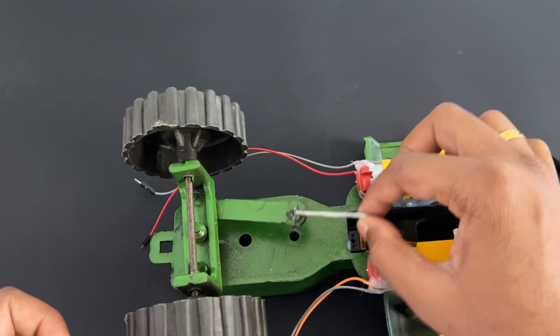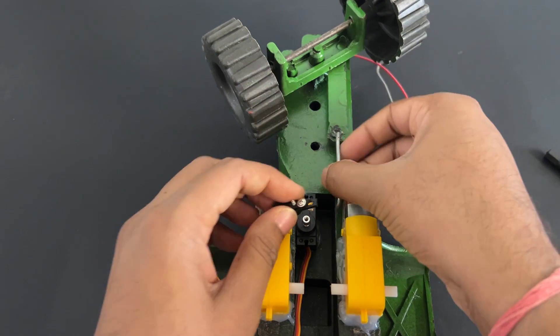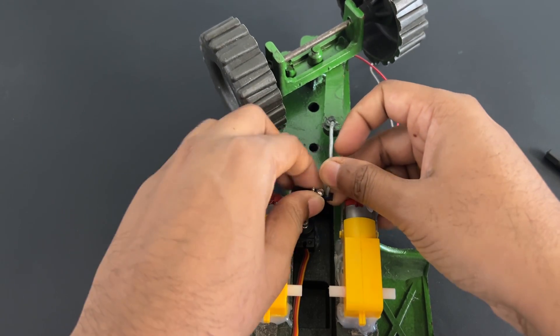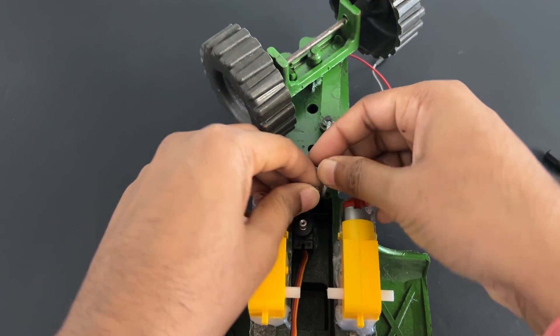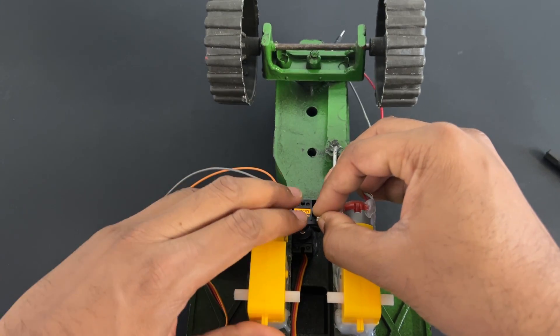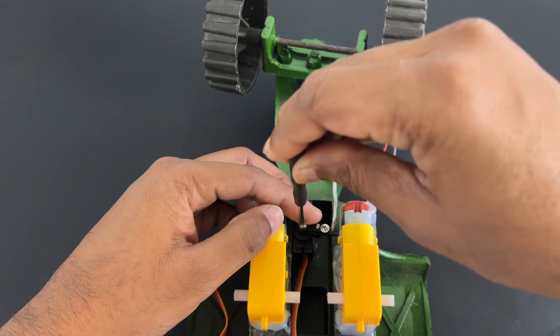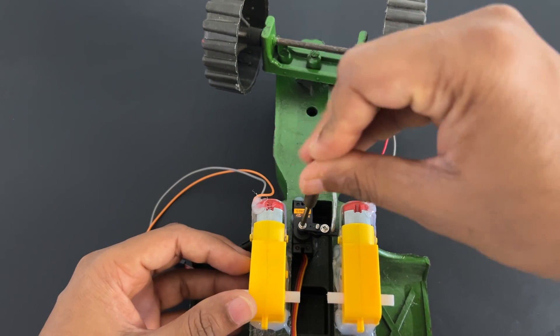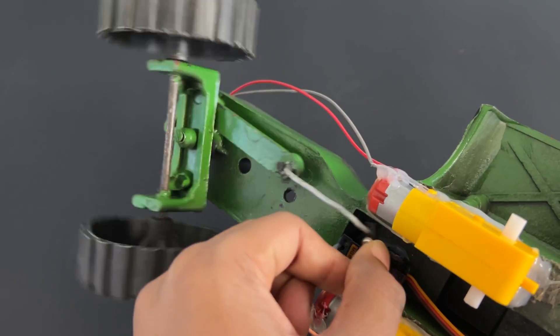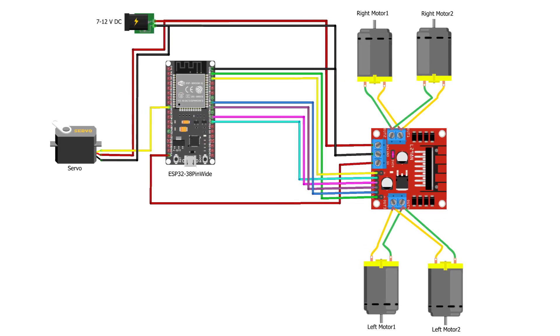Attach servo motor now. Use steering wheels. Now let's make a connection as per circuit diagram.